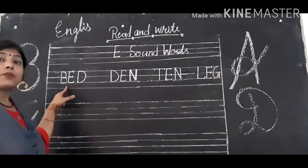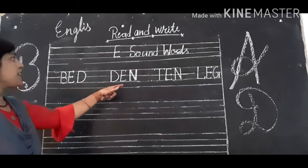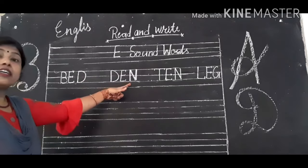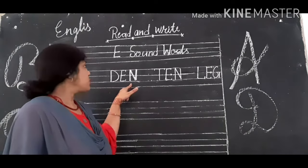Bed means visitor. D, E, N — Den. Den means lawyer's house.